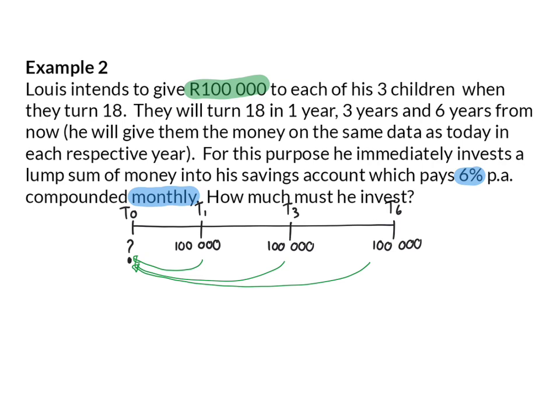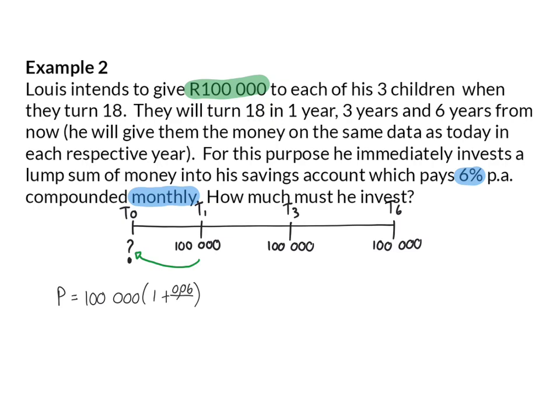Put differently, how much should he invest now to ensure that in one year, three years, and six years' time respectively, he will have 100,000 rand? Because we are moving back on our timeline, we are going to work with a negative exponent in our calculations. To determine the starting value of the first 100,000 rand, I know I will have to remove the interest it has received for a year. The 6% compounded monthly needs to be removed, indicated by the negative exponent, and that will be for one year's worth of months. This calculation tells me what Louis should invest now so that in one year's time it will be worth 100,000 rand.